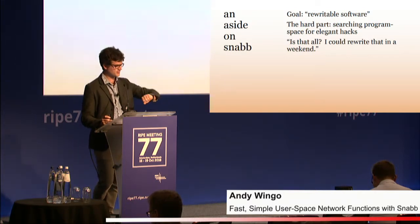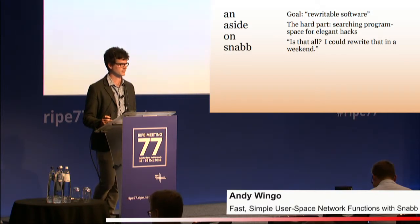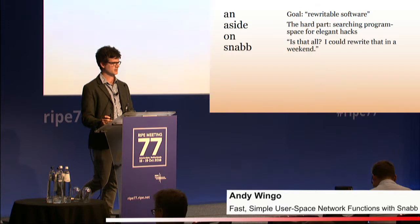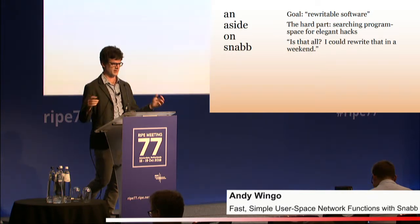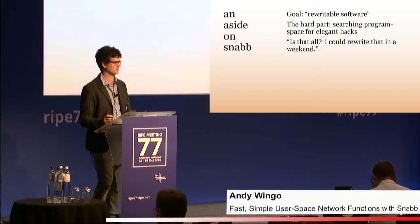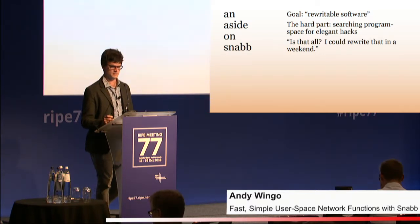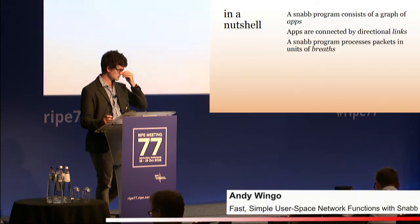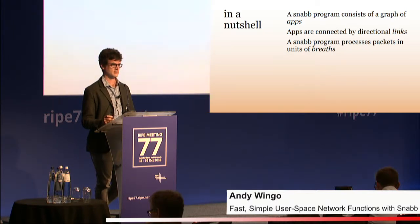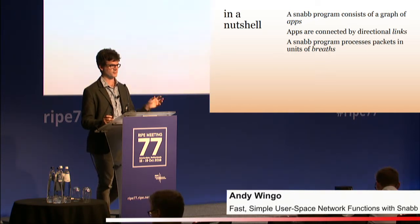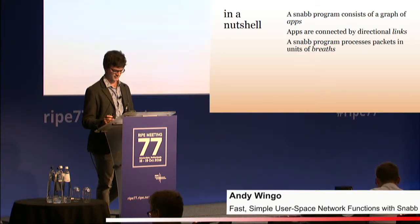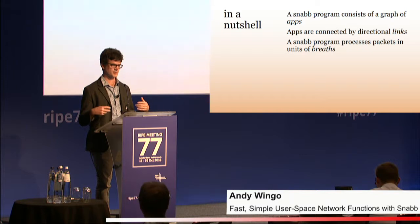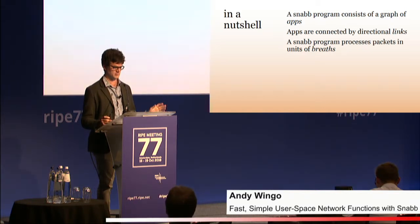On the Snab project, we try to write what we call rewritable software — meaning software that if you looked at it, you could say, 'Is that all? I could do that in a weekend.' The hard part is searching the space of programs to find the small ones that suit the use case. A Snab program — the network function — consists of apps linked together in a directional graph. These directional links are called links, and the Snab program processes packets in units called breaths.